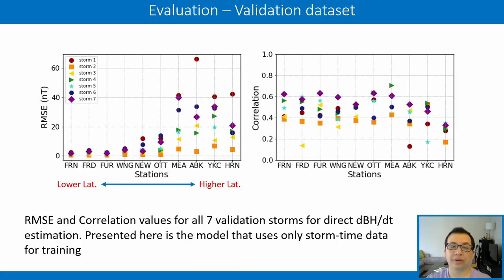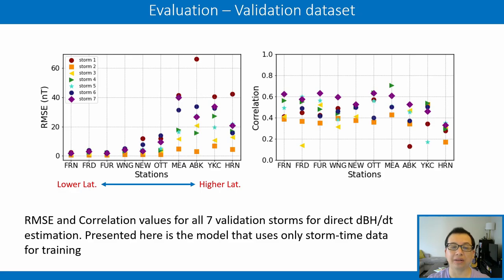Moving to the validation dataset, we see a similar panorama. RMSE increases with latitude, though differently for different storms. Correlation coefficient remains relatively constant across stations for each individual storm, with most storms presenting values slightly above or below 0.5. Both the test and validation sets show a clear decrease in correlation for high-latitude stations compared to mid-latitude stations, which may be consistent with claims that at high latitudes, auroral and local processes may be more important than the global solar wind drive.